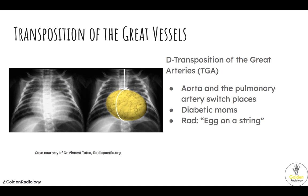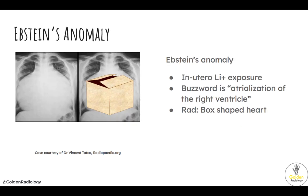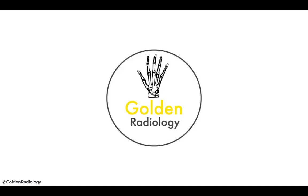As a bonus, Ebstein's anomaly is associated with in utero lithium exposure. The buzzword is atrialization of the right ventricle, and the image to know is the box-shaped heart. If you see a very large heart taking up most of the chest and the vignette suggests lithium exposure, think Ebstein's anomaly. Thanks so much for tuning in — we'll see you next time.